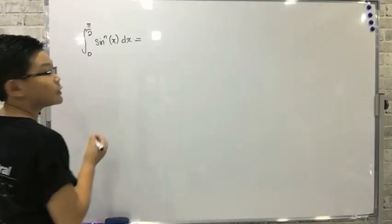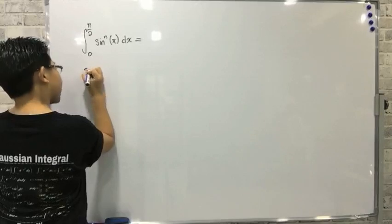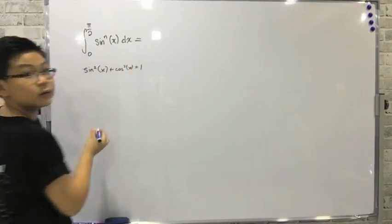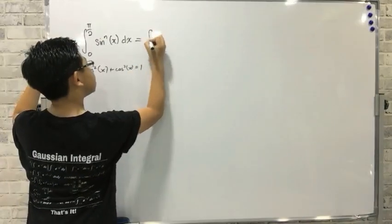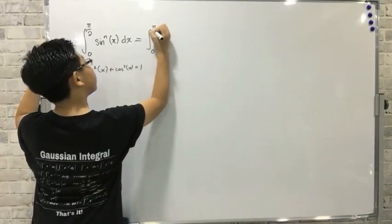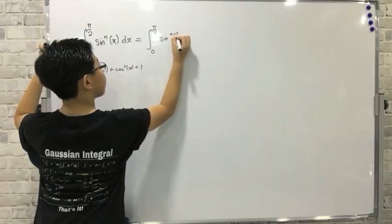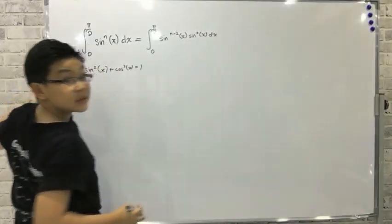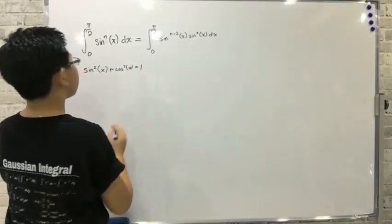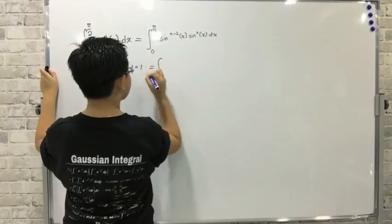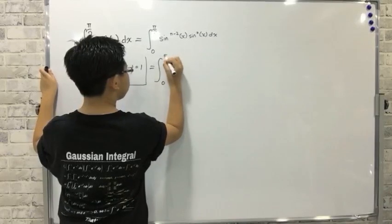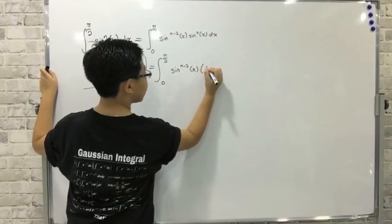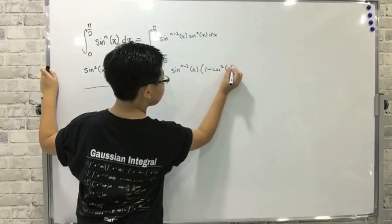Here's the first thing we need to do. We need to know our identities. Do you know the fact that sin squared of x plus cos squared of x is 1? Well, this is the thing that we need. So we need to rewrite this as the integral from 0 to pi over 2 of sin to the n minus 2 of x multiplied by sin squared of x dx. From here, we can rewrite this using this identity to give the integral from 0 to pi over 2 of sin to the n minus 2 of x and then 1 minus cos squared of x dx.